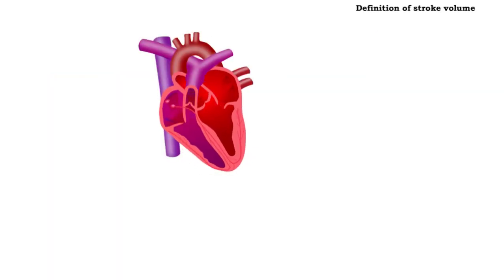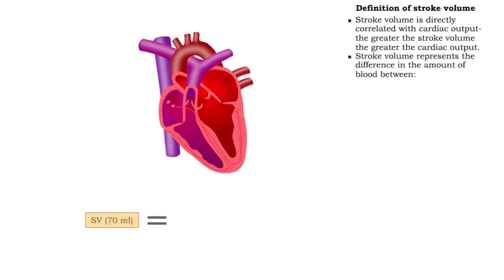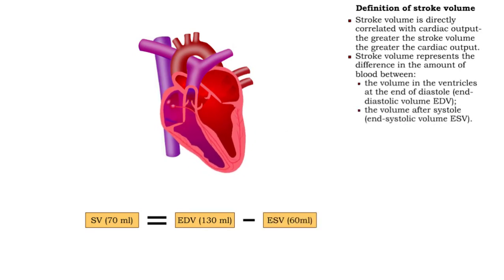Stroke volume is directly correlated with cardiac output. The greater the stroke volume, the greater the cardiac output. Stroke volume represents the difference in the amount of blood between the volume in the ventricles at the end of diastole and the volume after systole.